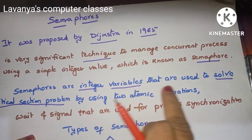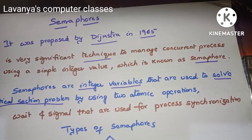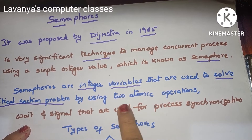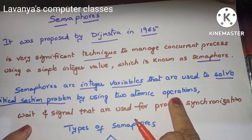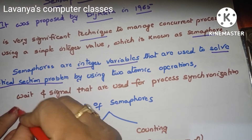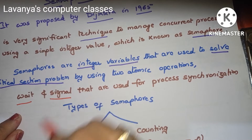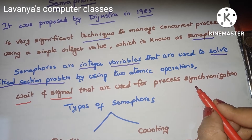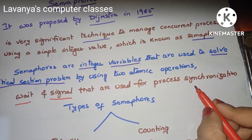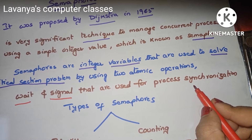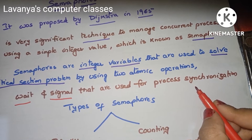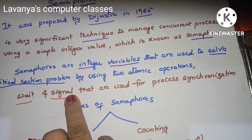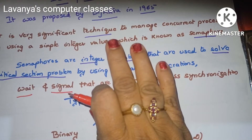Semaphores are integer variables used to solve the critical section problem using two atomic operations. Those operations are known as wait and signal, used for process synchronization. The semaphore is executed with two operations: one is the wait operation and the second is the signal operation.